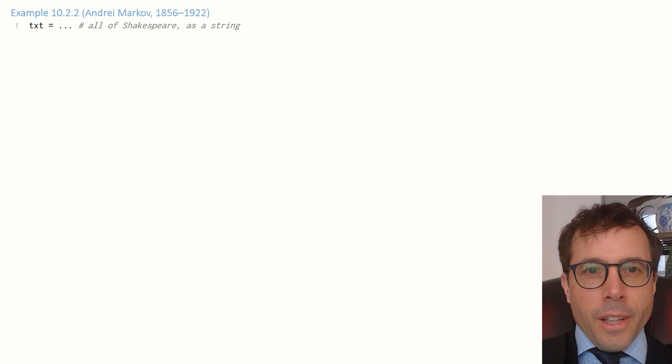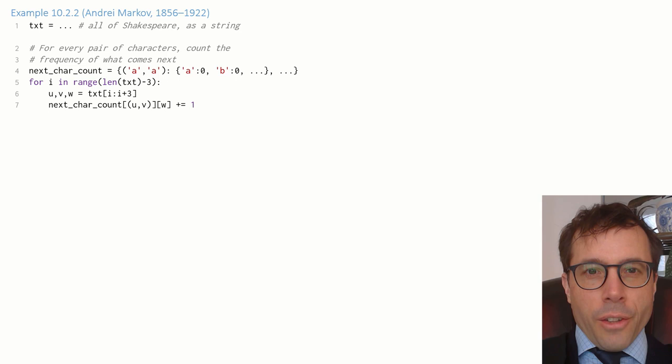First, let's get all our text as a string. Next, I'll scan through the entire text character by character, and for every pair of characters I come across, I'll keep a counter of what character followed that pair and how many times it occurred. I'll store all of this in a dictionary of dictionaries called next_char_count. A list of three successive characters like this is called a trigram.